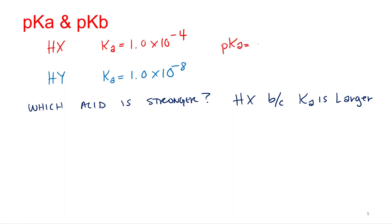PKA equals negative log of the KA. So negative log of 1.0 times 10 to the negative fourth equals four. And then HY's would be PKA equals negative log 1.0 times 10 to the negative eighth. Its PKA is eight.